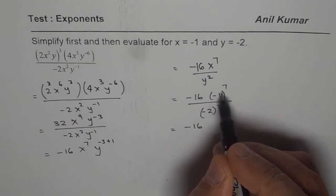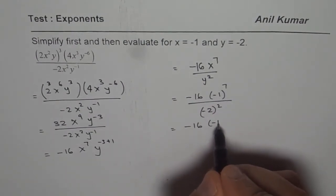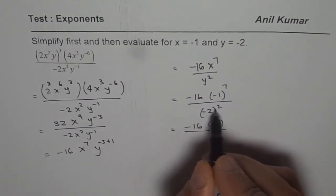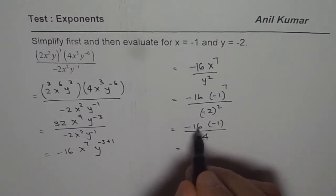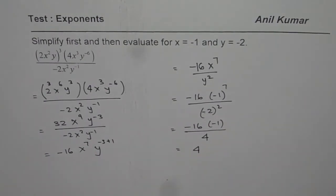Minus 16, minus 1 to the power of 7 will give us negative 1. And minus 2 even power, even makes it positive, 2 square is 4. So minus minus is positive, 16 divided by 4 is 4. So the given expression evaluates to 4. Thank you.